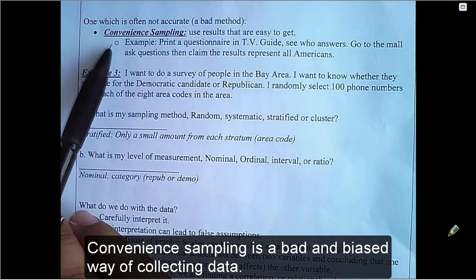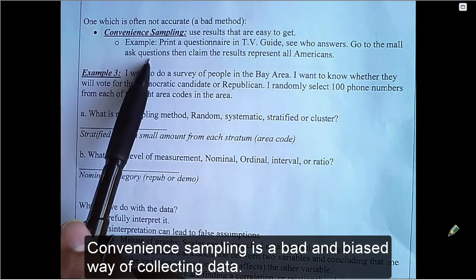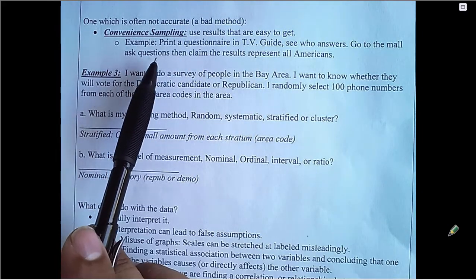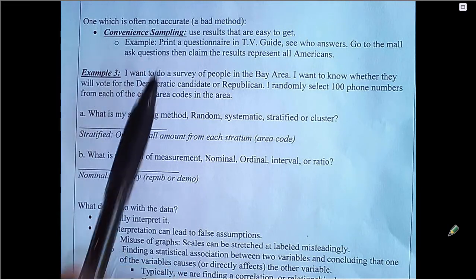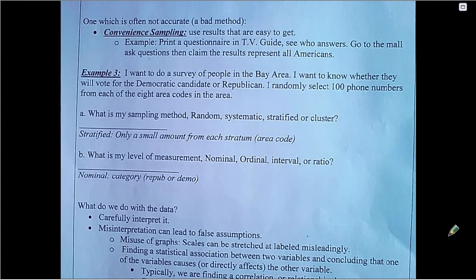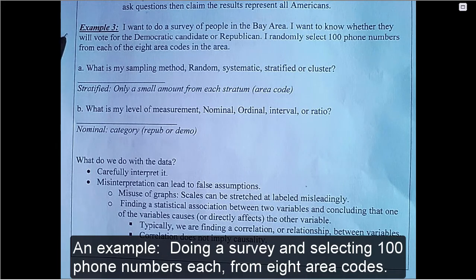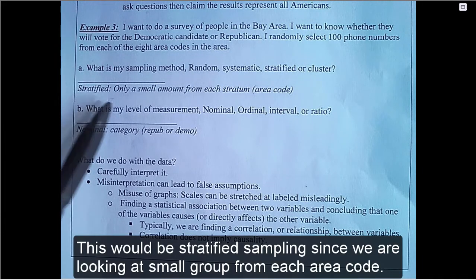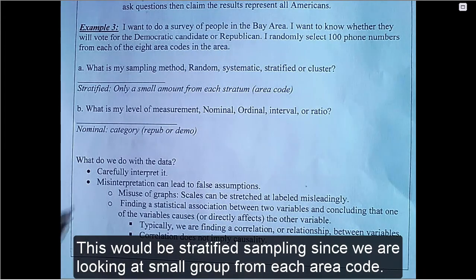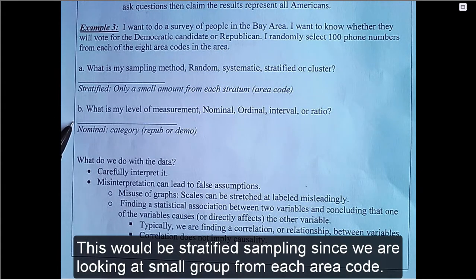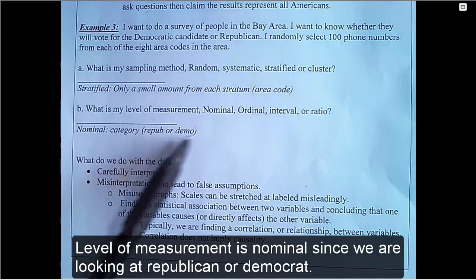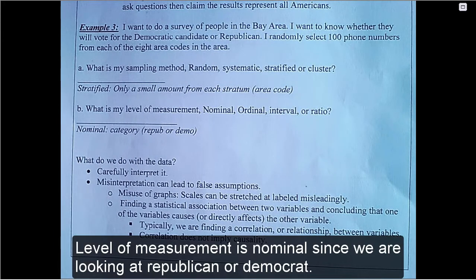Convenience sampling is a bad and biased way of collecting data. An example: doing a survey and selecting 100 phone numbers each from 8 area codes. This would be stratified sampling since we are looking at a small group from each area code. Level of measurement is nominal since we are looking at a Republican or Democrat.